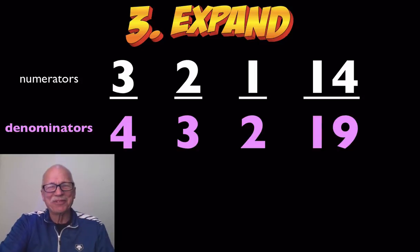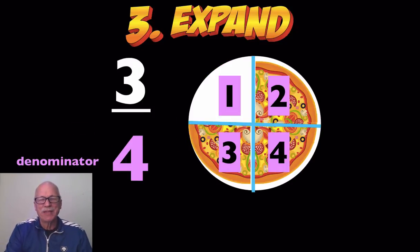Now, let's expand that further. Watch. Look at that. Just pay attention to the denominator down here. You see that denominator is four. That pizza originally had four parts. That was all the parts in the whole pizza was four.